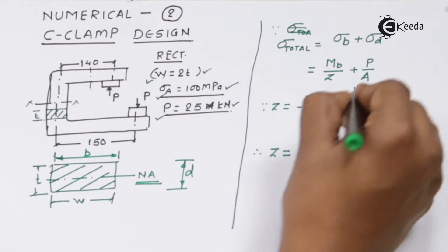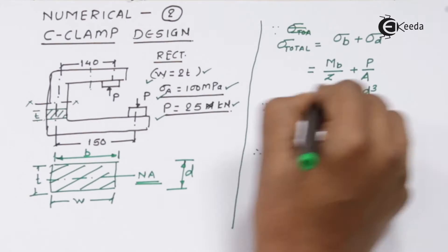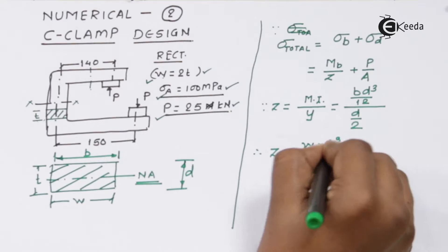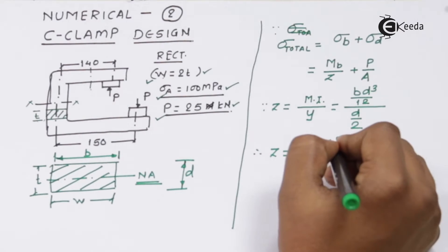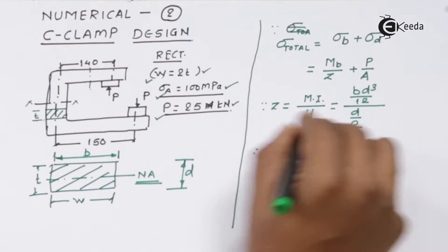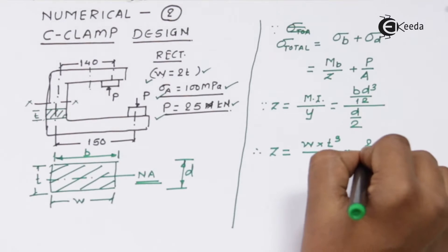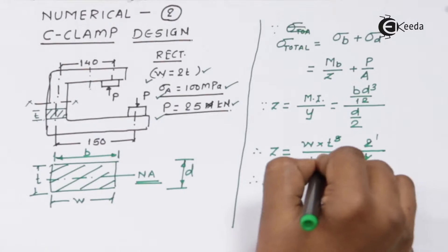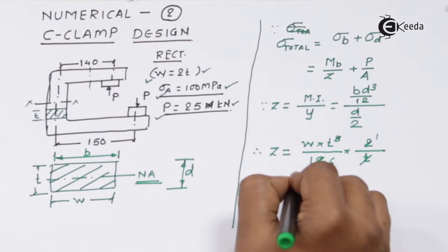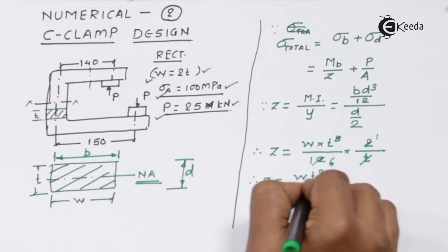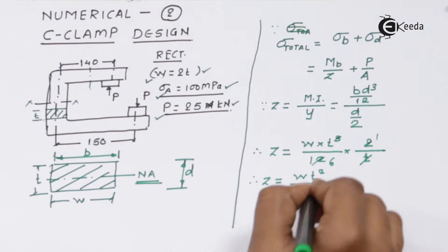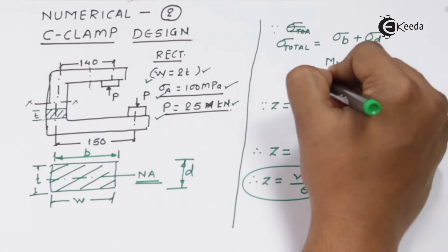Therefore I can say Z is equal to, for B is width, for D it is T thickness, by 12 into the factor 2. The depth again is in terms of T, one factor of T goes up, and therefore Z in our case will become WT² divided by 6. This value of Z we are going to replace in this formula.